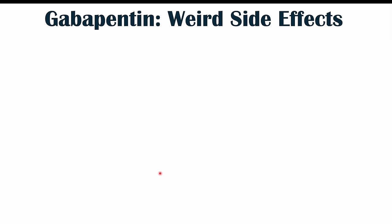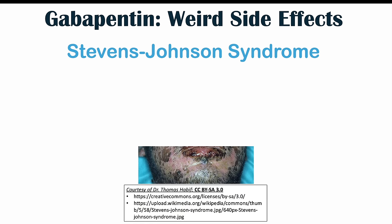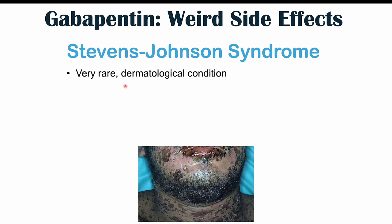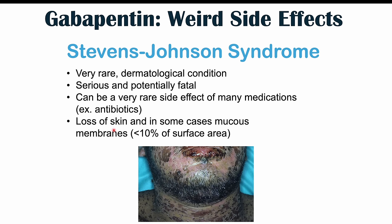Another very important dermatological finding is Stevens-Johnson syndrome. It is a very rare but serious and potentially fatal condition. About 80% of Stevens-Johnson syndrome cases are due to a medication reaction, and antibiotics are a common cause. It involves loss of skin through necrotic lesions and skin sloughing, and can also affect mucous membranes. Stevens-Johnson syndrome is defined as less than 10% of the body's surface area being affected.